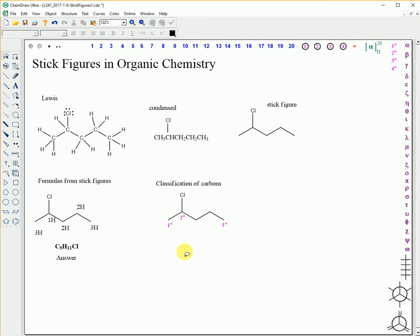Later in the course and the next course, you're going to see that classification has a bearing on the behavior of atoms. So right now we're just learning how to classify without knowing why it's important. This is a secondary carbon because it has two bonds to carbon.